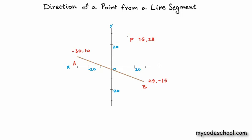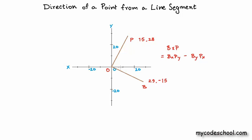Cross product can only be applied to a pair of vectors at a time, and here we have three points. So let's ignore point A for now, leaving only B and P. B cross P mathematically equals the x coordinate of B times the y coordinate of P, minus the y coordinate of B times the x coordinate of P. Let's label the origin O, where x and y are both 0, and draw the angle BOP. The cross product is positive if and only if this angle is counterclockwise, and negative if and only if this angle is clockwise.